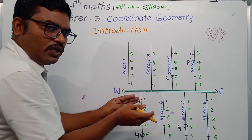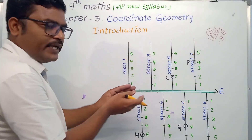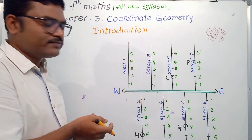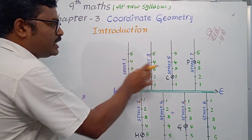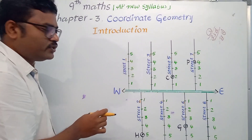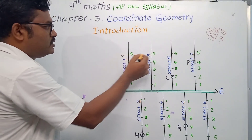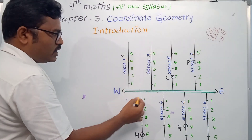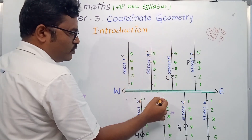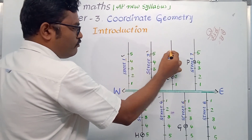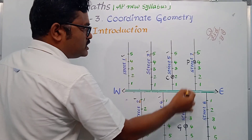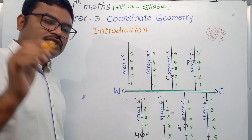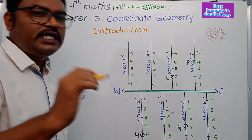So this main road has streets on both sides. What is the numbering? This is street 1, this is street 2, and 3, 4, 5, 6, 7, 8. There are 8 streets.